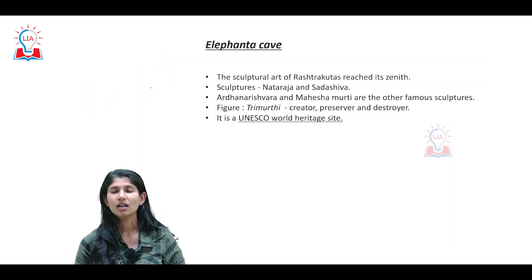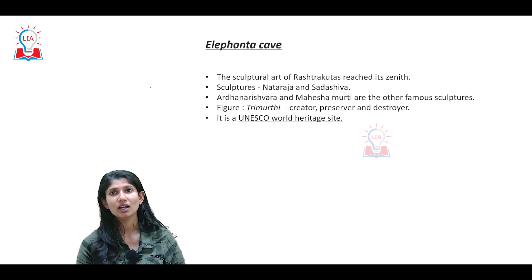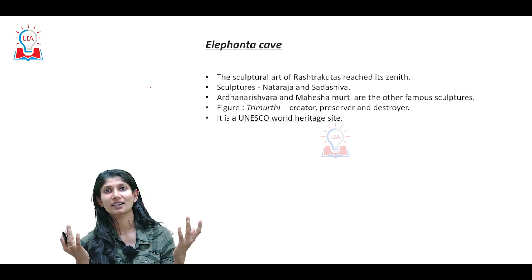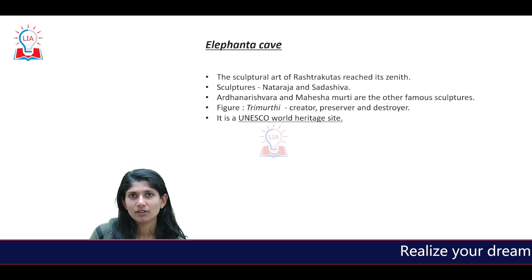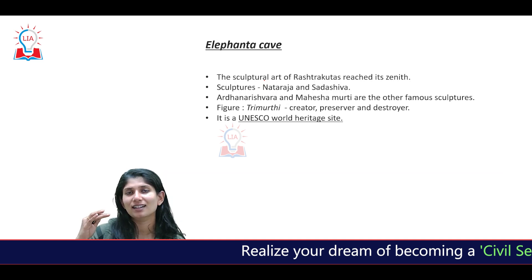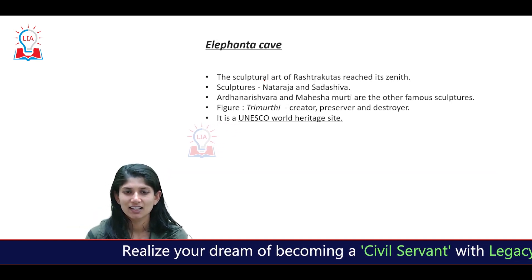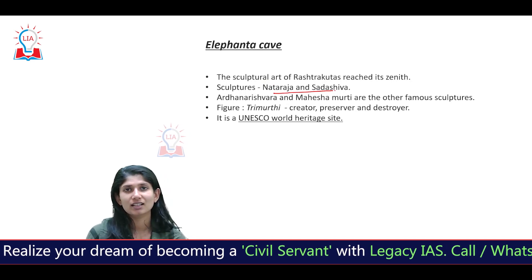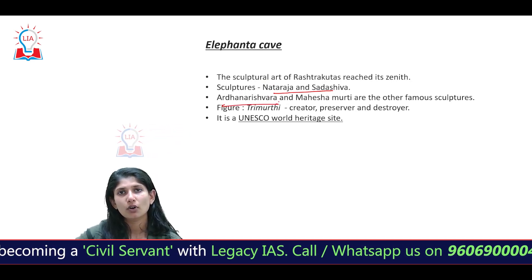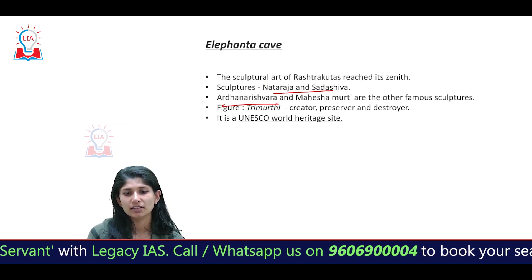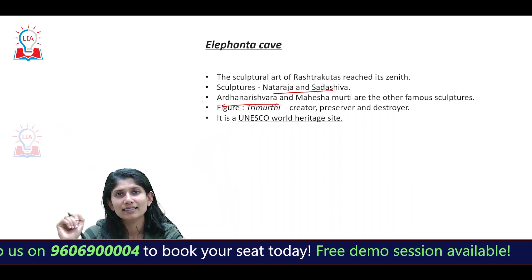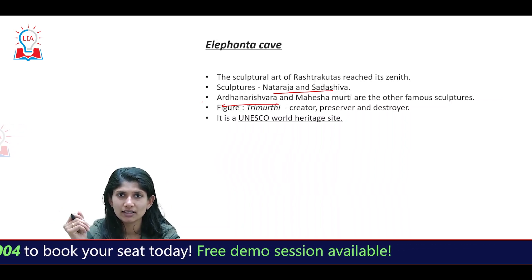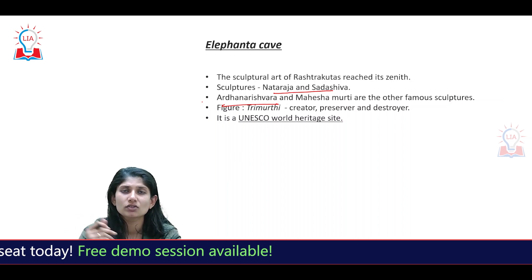The last site is the Elephanta Cave. The myth associated with it is that when Europeans came for the first time and visited this place, they saw a huge elephant here — and thus named it the Elephanta Caves. This is where Rashtrakuta architecture reaches its zenith. We have sculptures of Nataraja, Sadashiva, and Ardhanishvara. Very important from a prelims perspective is the Trimurti, which indicates creation, sustenance, and destruction. Elephanta Caves is also a UNESCO World Heritage Site.